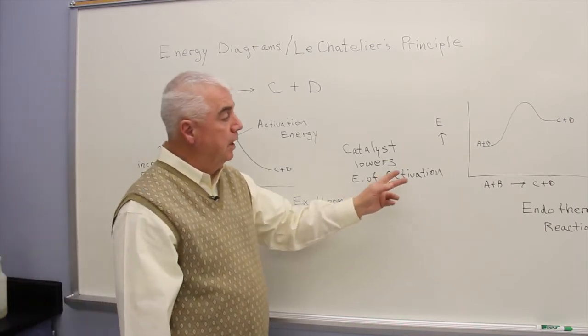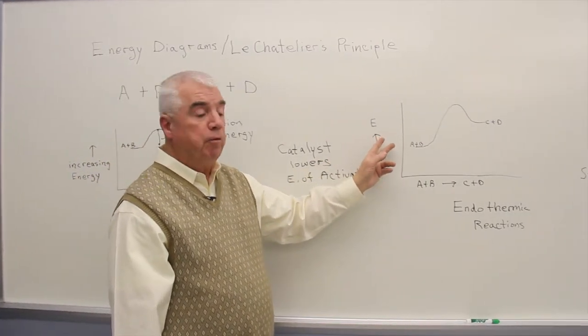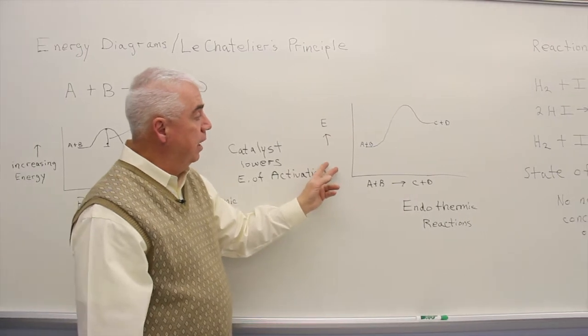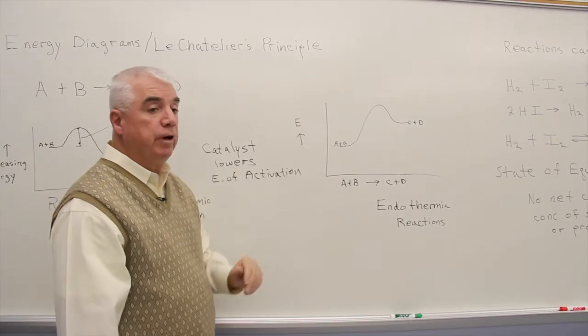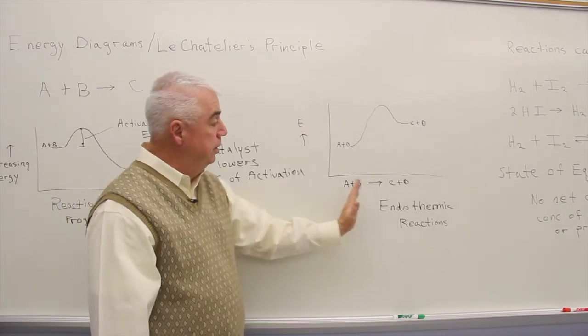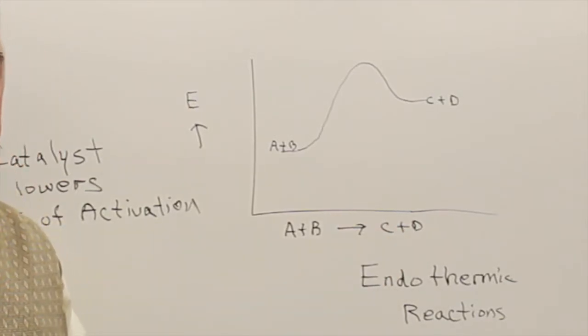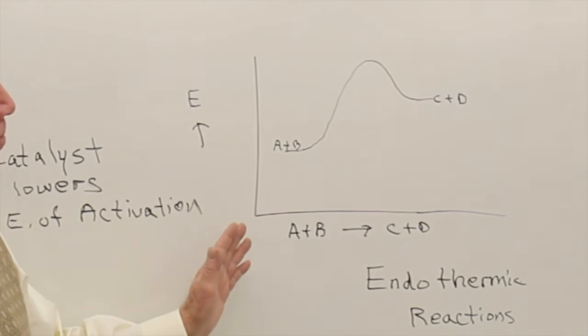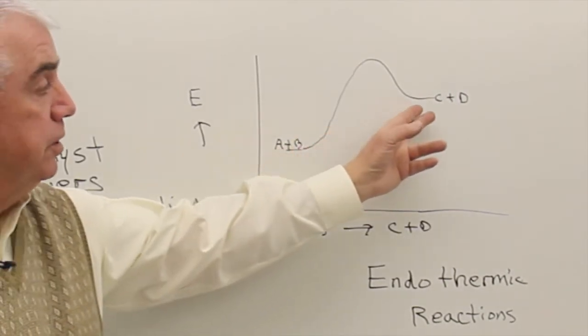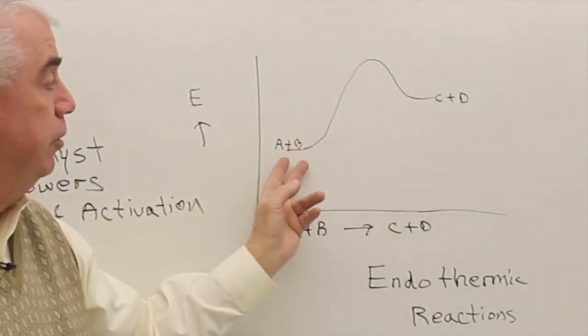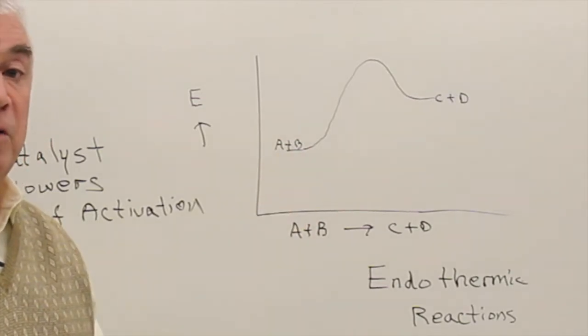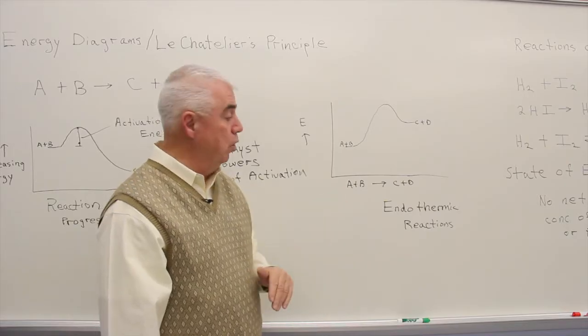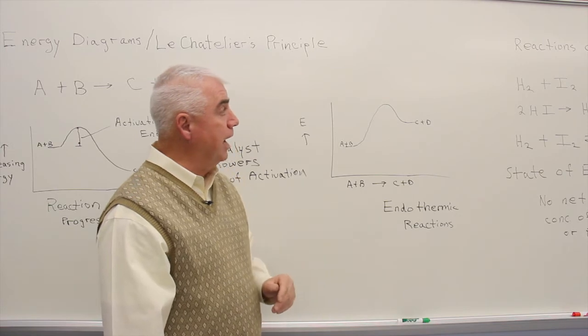Another diagram represents an endothermic reaction. Energy is increasing in the vertical direction, the progress of the reaction in the horizontal direction. The energy level of the products is greater than that of the starting materials. It means energy was absorbed. It's an endothermic reaction.